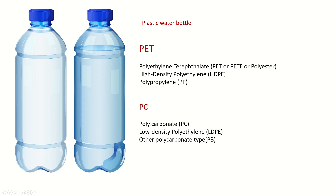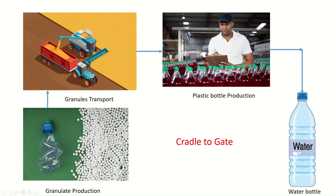When we consider a plastic water bottle, they are of two types: PET and PC. PET is again of three types: polyethylene terephthalate (PET), high-density polyethylene (HDPE), and polypropylene (PP). In our first project, we are only going to look into the PET plastic water bottle as a case study.